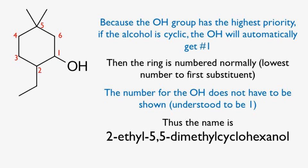And that's all there is to it. Alcohols are pretty straightforward to name, because the OH group takes priority over everything else. So just remember: always number in a direction that gives the OH group the smallest number. This does not mean you start from the OH group — only when it's a cyclic alcohol do we start from the OH group as number 1. In a straight-chain alcohol, we start from the end of the molecule, but choose the end that gives the OH the smallest number.